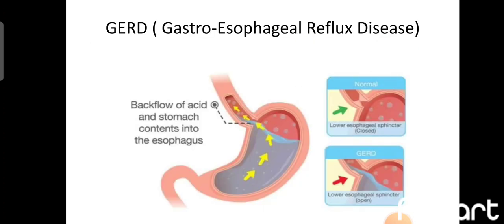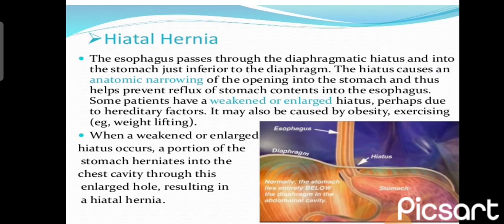GERD (gastroesophageal reflux disease) occurs when the cardiac sphincter is not working properly, causing reflux of gastric contents into the esophagus. Hiatal hernia involves herniation through the hiatus — the opening in the diaphragm that gives passage to the esophagus entering the stomach.